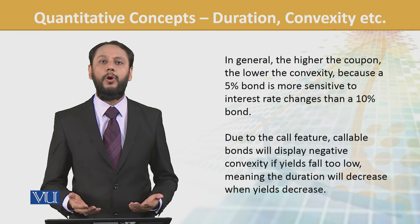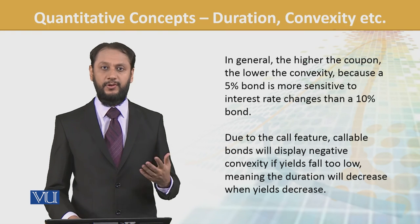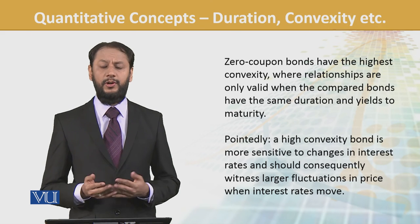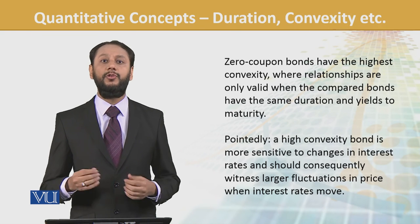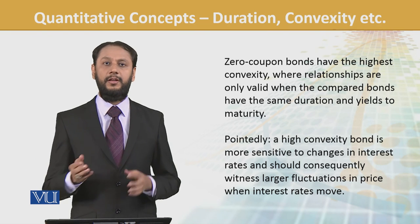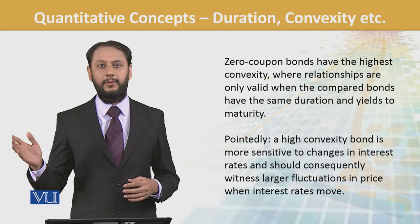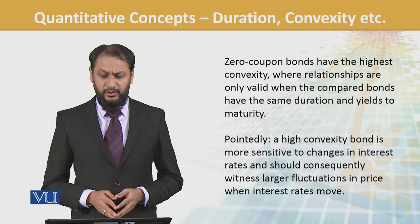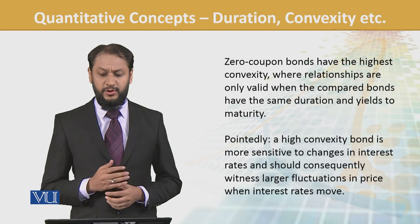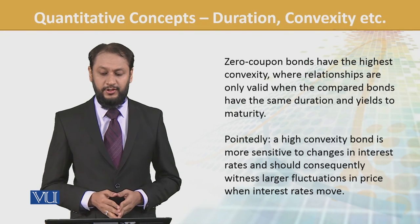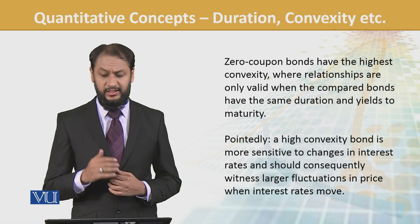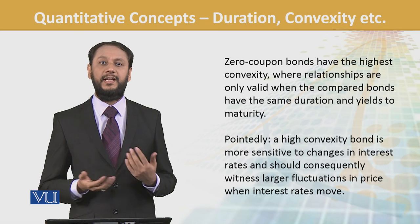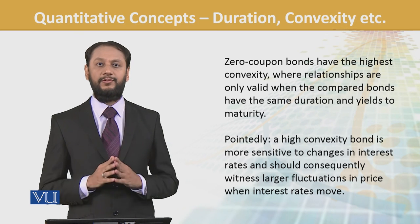Duration cannot properly capture these variations — that's why we need convexity. Zero coupon bonds have the highest convexity because there are no intermediate payments; it's just the initial investment and the final maturity payment, so the impact is the greatest there. A high convexity bond is more sensitive to changes in interest rates and should constantly witness larger fluctuations in price — because the higher the convexity, the greater the impact. We should be very careful with such bonds.